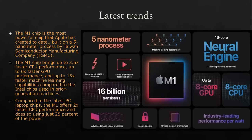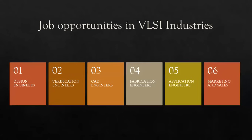The M1 chip contains 16 billion transistors, has an 8-core GPU and an 8-core CPU, and offers about 2x faster CPU performance at only 25% of the power. VLSI has been really fast-forwarding in its domain.